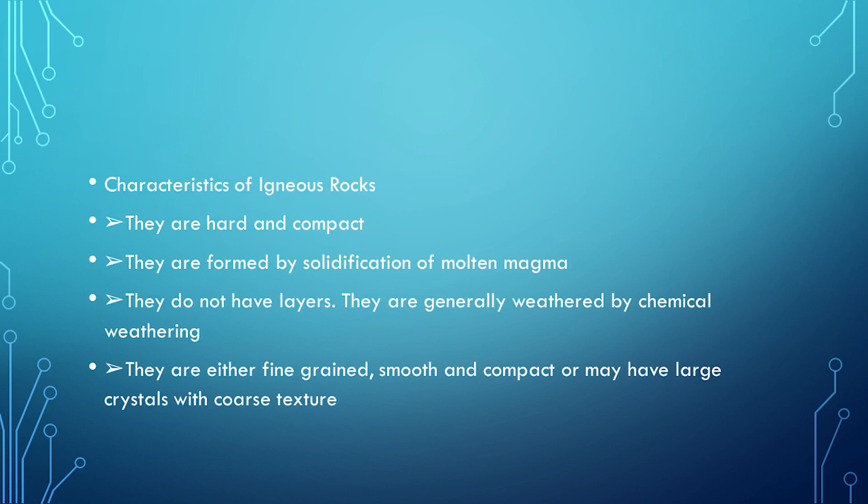Characteristics of igneous rocks: they are hard and compact; they are formed by solidification of molten magma; they do not have layers, but they are generally weathered by chemical weathering; they are either fine-grained, smooth and compact, or may have large crystals with coarse texture.